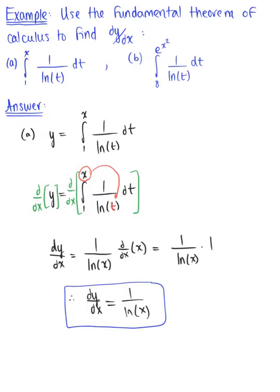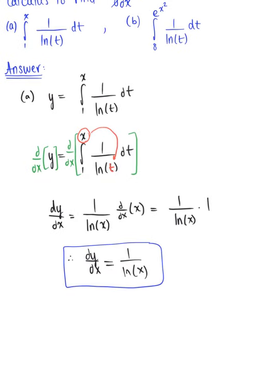And so part b — let's rewrite part b before we scroll down. We are given here in part b that y is equal to the definite integral from 8 to e raised to the x squared of 1 over the natural log of t, dt.